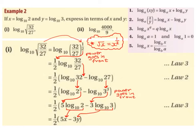The first thing we want to do is rewrite root(32/27) as (32/27) to the power of a half. Root x gives us x to the power of a half — this is one of our laws of indices. So the big square root becomes to the power of a half. In our next step, we bring the power, which is a half, in front of the log, giving us a half log base 10 of 32/27.